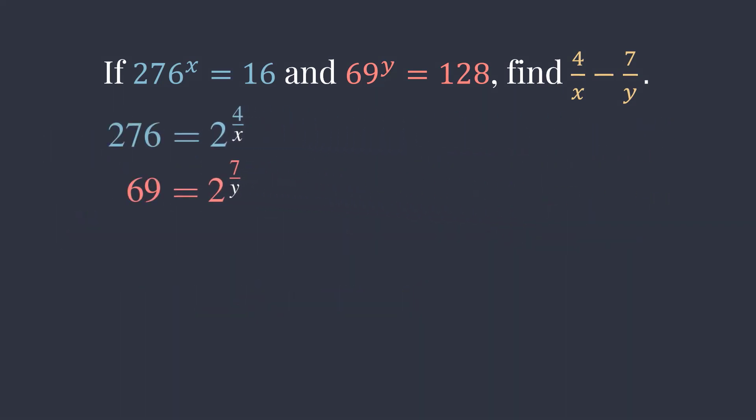Now, 276 is equal to 2 to the 4 over x, and 69 is equal to 2 to the 7 over y. If we divide 276 by 69, then we are dividing 2 to the 4 over x by 2 to the 7 over y.